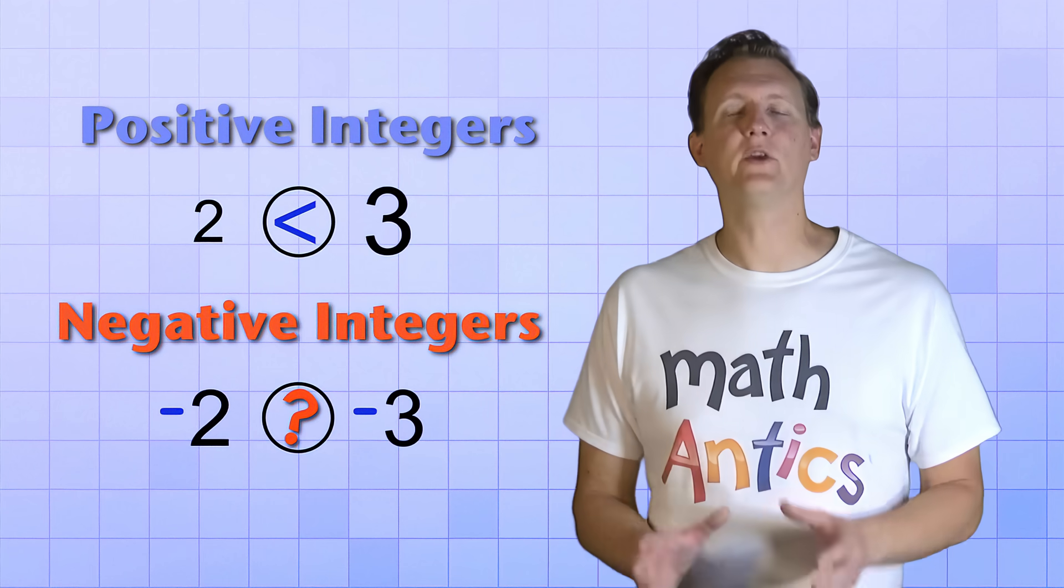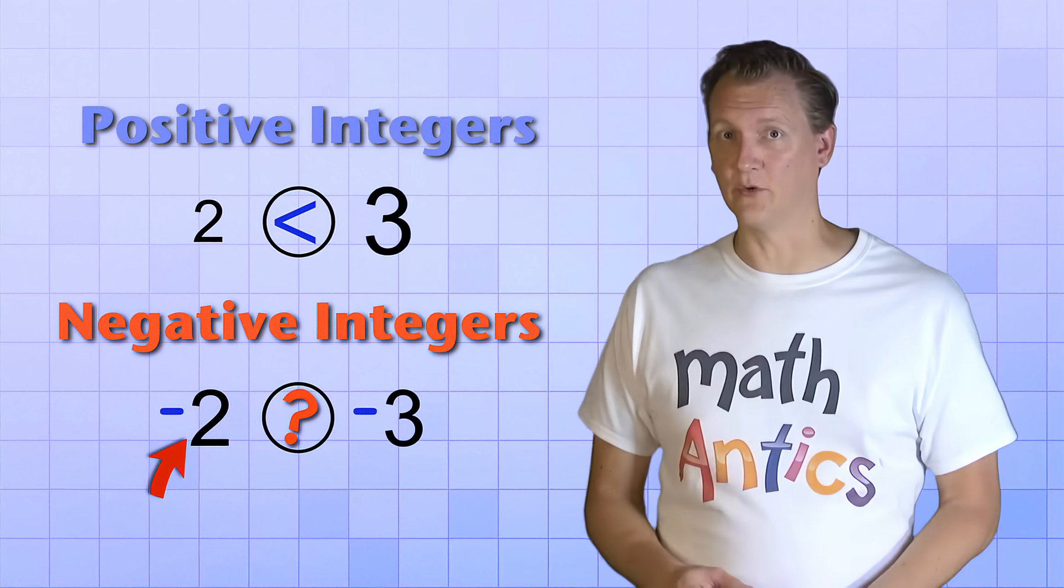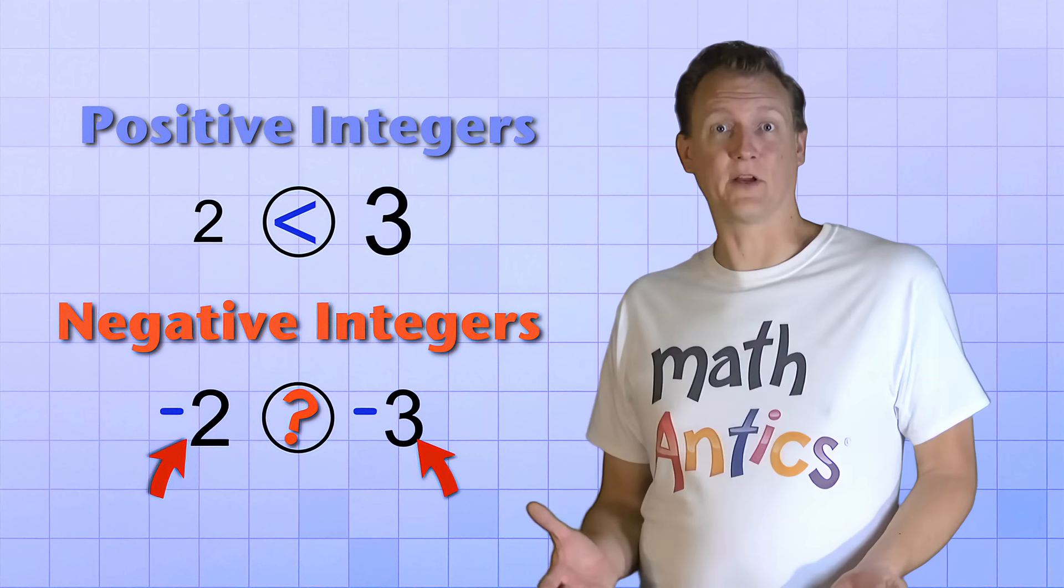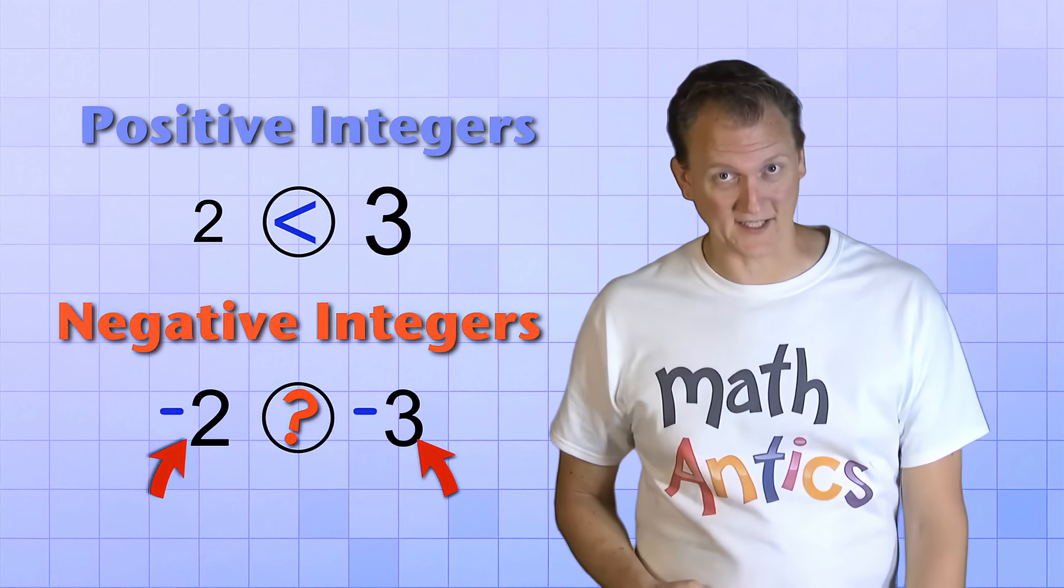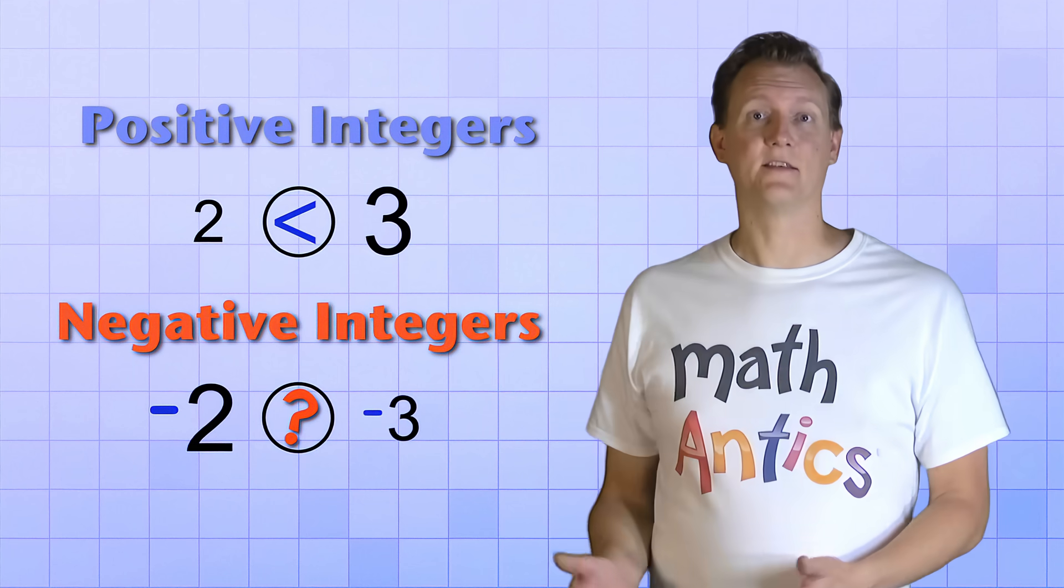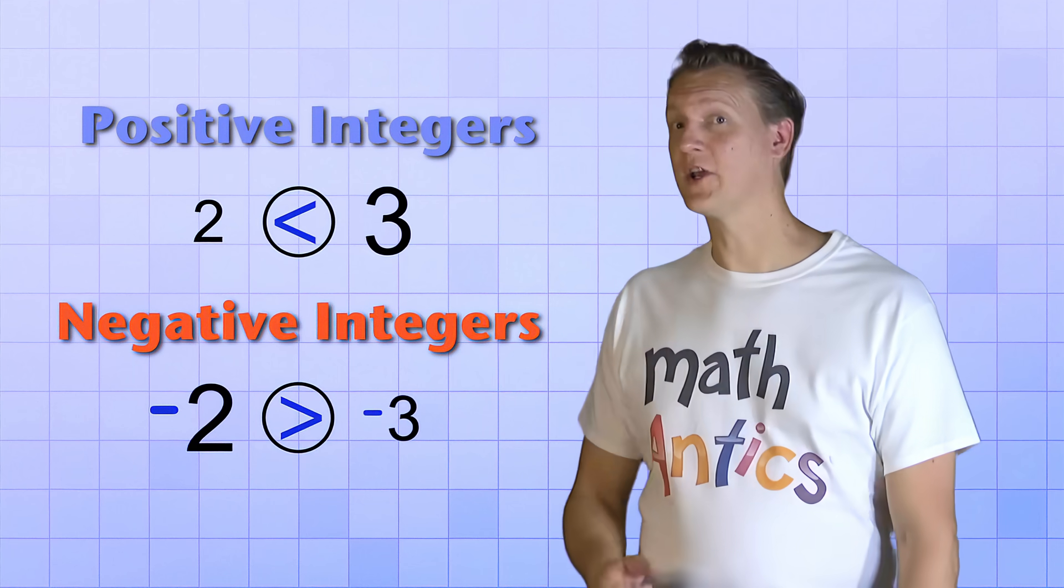That's because you're so used to 3 being bigger than 2, that when you see negative 2 and negative 3, it's really tempting to think that negative 3 must be bigger than negative 2. But it's not. Negative 3 is actually smaller or less than negative 2. And to help you understand why, let's look at our number line again.